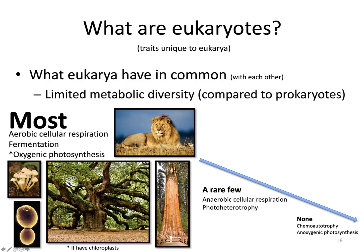Chemoheterotrophs do aerobic cellular respiration in their mitochondria. They can also do a little fermentation but mostly rely on aerobic cellular respiration. There are also photoautotrophs — if they have chloroplasts, and it's not just plants that have chloroplasts, they do oxygenic photosynthesis. Plants also have mitochondria and do aerobic cellular respiration, but on top of that they can do oxygenic photosynthesis.